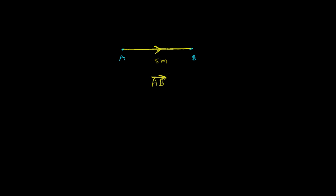Similarly, if you are moving from B to A, then again you have to give the direction. Let's say this is point B and this is point A — you are moving from B to A, so you give the direction in the opposite way. So this vector is written as B to A.